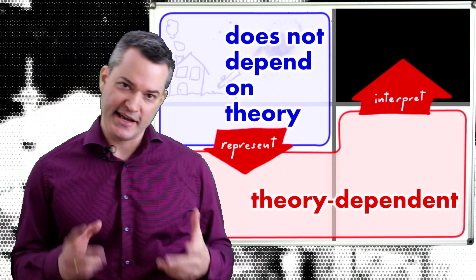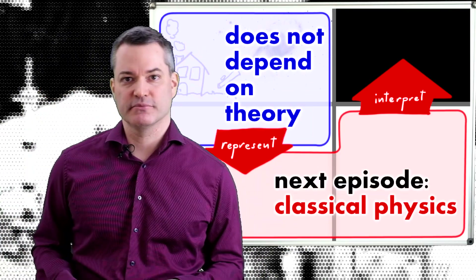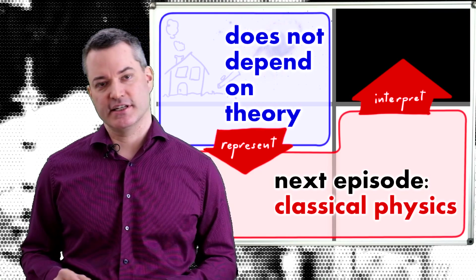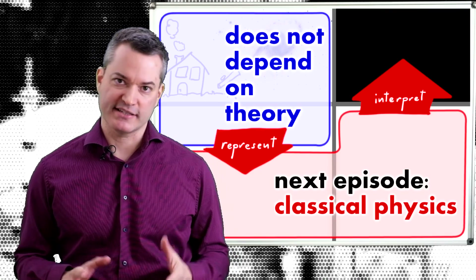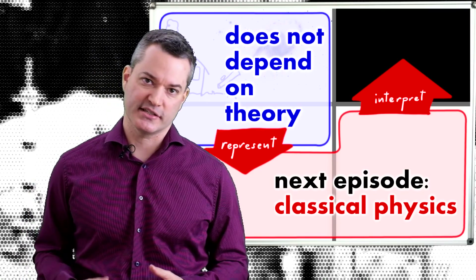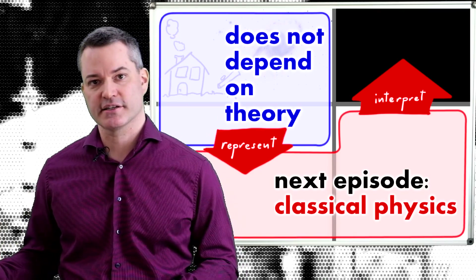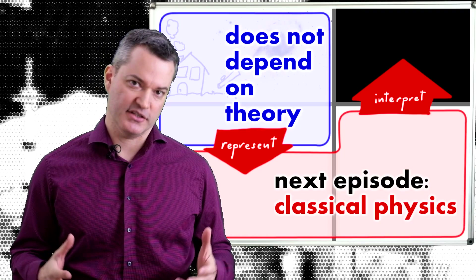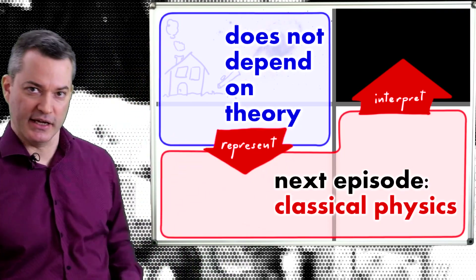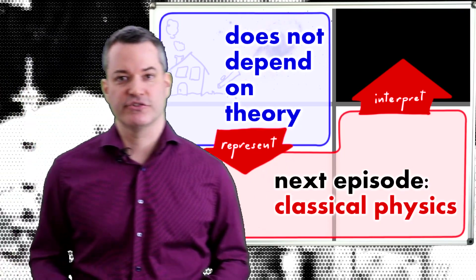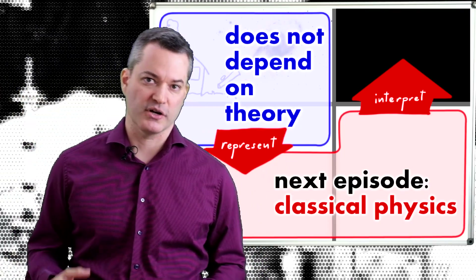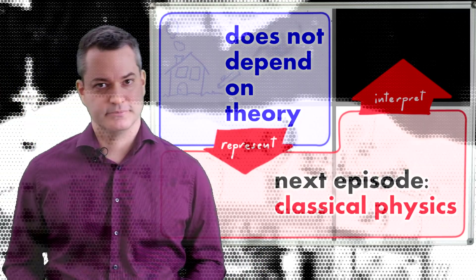In the next episode, we will specifically discuss how classical physics, as it was known before quantum mechanics, fits into this framework, and what classical physics got wrong about the world.